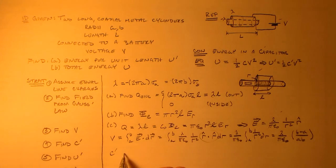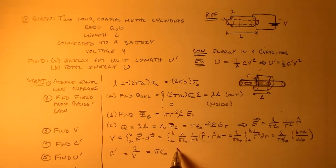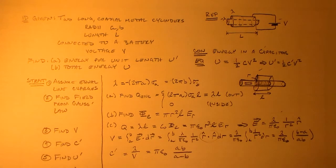C prime then is just lambda over V, right? And if C prime is just lambda over V, then we cancel that out. We have the whole thing is pi epsilon naught AB over A minus B. Fairly simple.